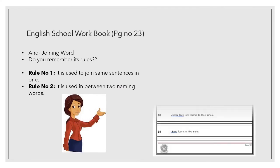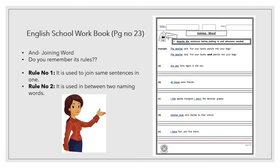Number 23. On page number 23, it's the and word. Do you remember the and word? Yes. And do you remember its rules? Excellent. What was the rule number 1? It is used to join same sentences. And the rule number 2 was, it is used in between two naming words. Two naming words, two nouns ke beech mein ye and be aata hai so that it can make a sensible sentence.